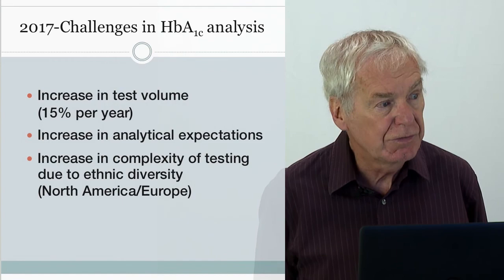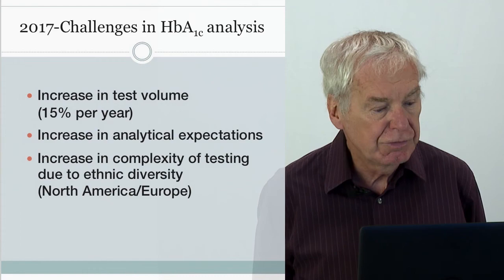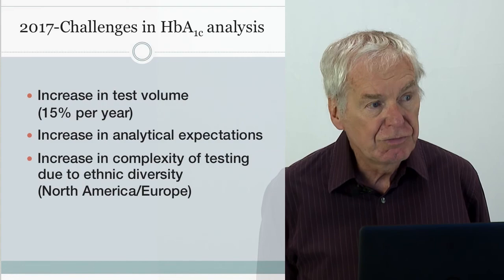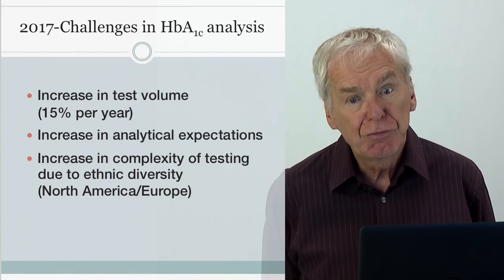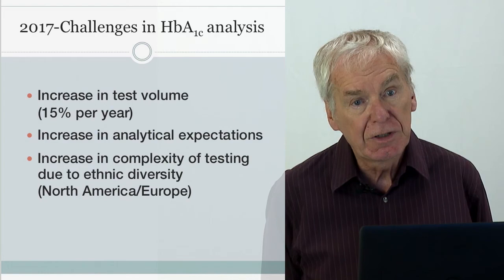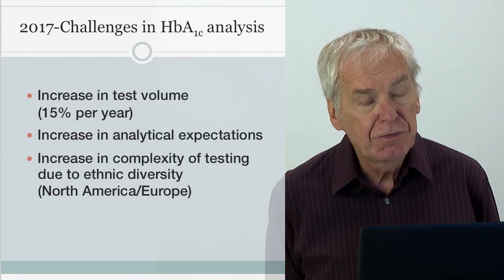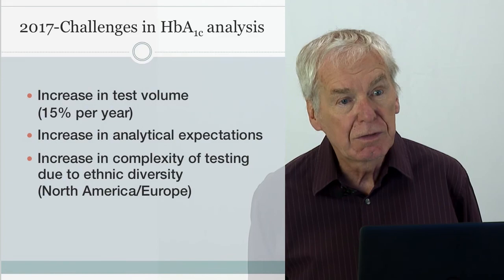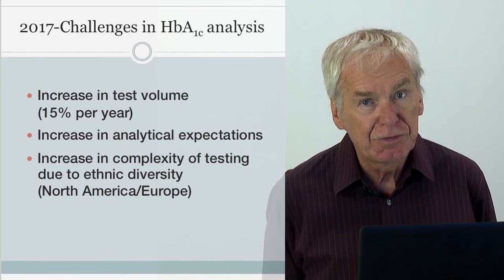We have seen a large increase in test volume. In our laboratory it is one of the fastest-growing tests, increasing by about 15% per year. The second challenge has been increased analytical expectations — the precision level demanded of A1c analysis is now much stricter. At one stage 3.5% within-laboratory CV was adequate; now 2% is required. The third challenge is increased complexity due to ethnic diversity, with a large increase in hemoglobin variants that challenge our analytical systems.